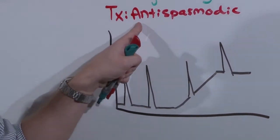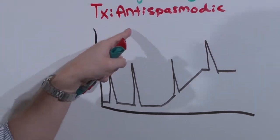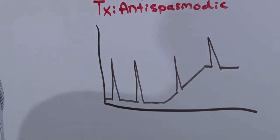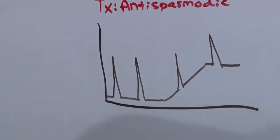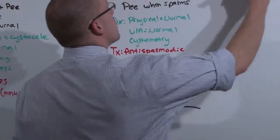Which is why you give antispasmodics to prevent it. You have to be careful because if you give too much antispasmodic medication, you may induce the next kind of incontinence, hypotonic or overflow.